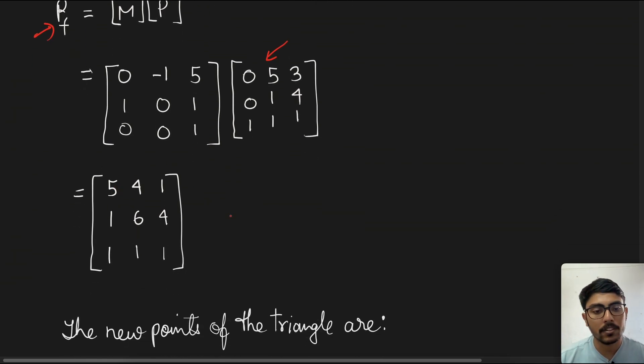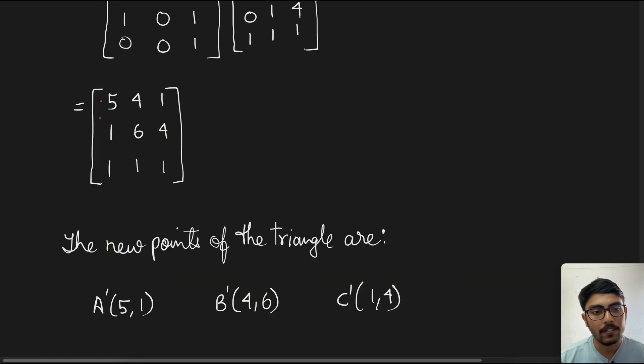So this is what we get. Now from this matrix, we can deduce the points that we have calculated. So (5,1) denotes A', (4,6) denotes B', and (1,4) denotes C'. That's how you find the new points after rotation about an arbitrary point by any given angle.